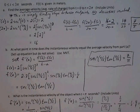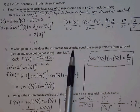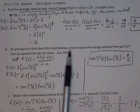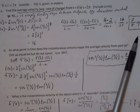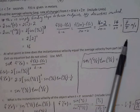Part B, at what point in time does the instantaneous velocity equal the average velocity from part A? So the instantaneous velocity, this is dealing with the derivative. So we're going to set the derivative equal to the average velocity that we just found from part A. We don't have to solve, we just have to set up.